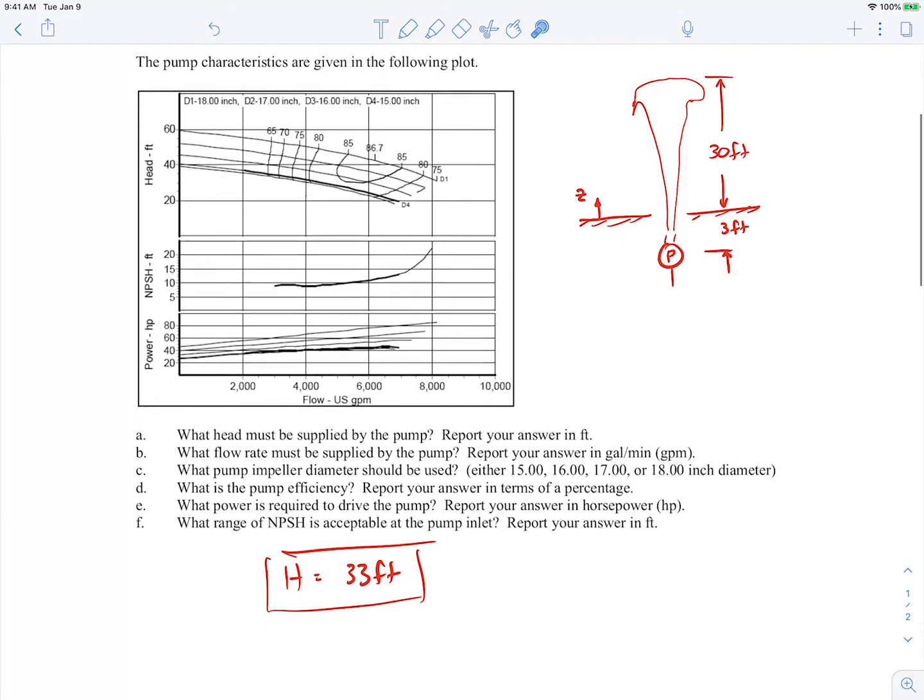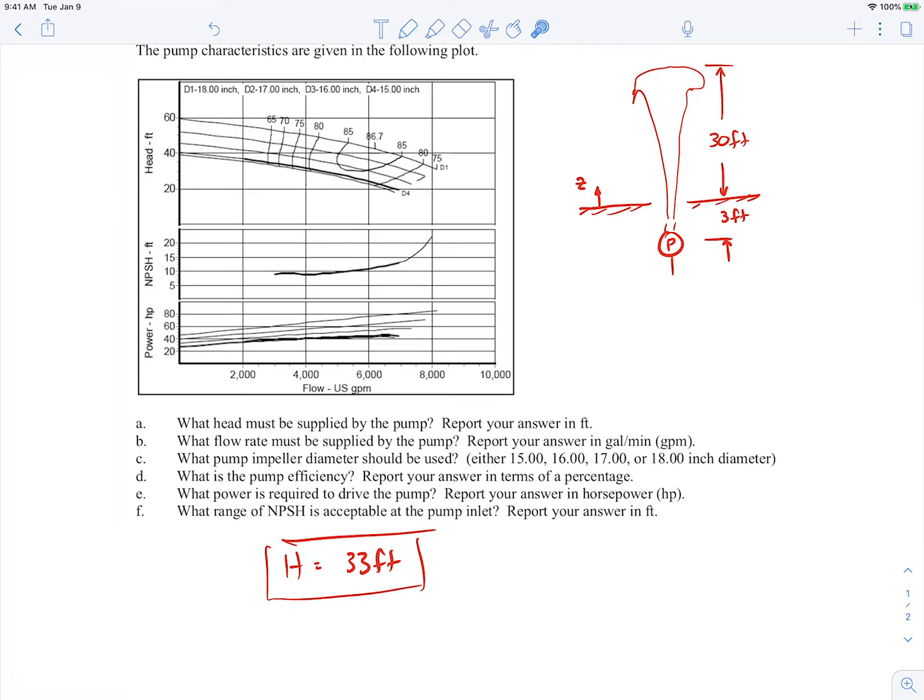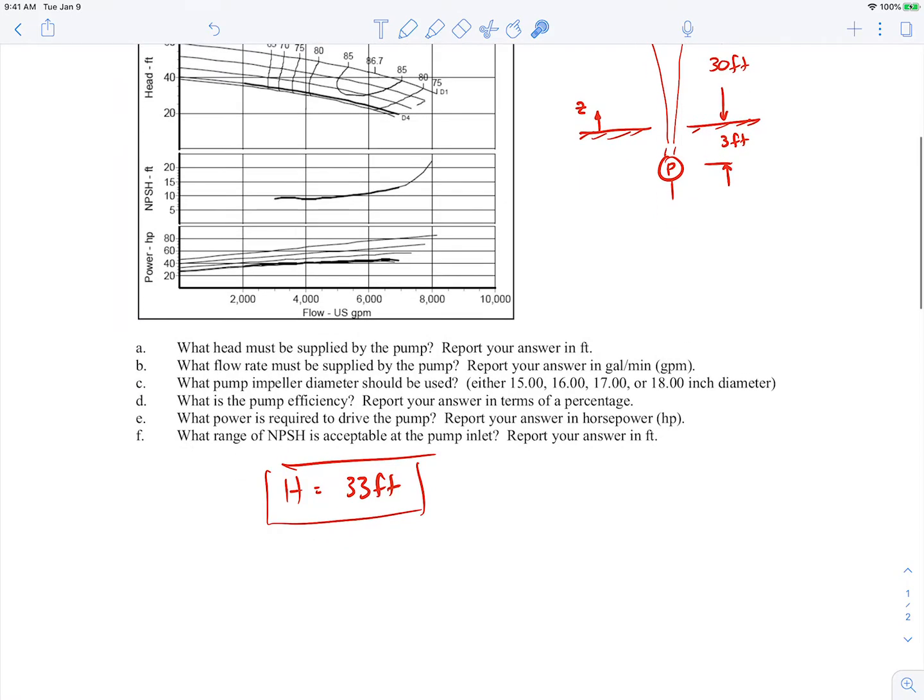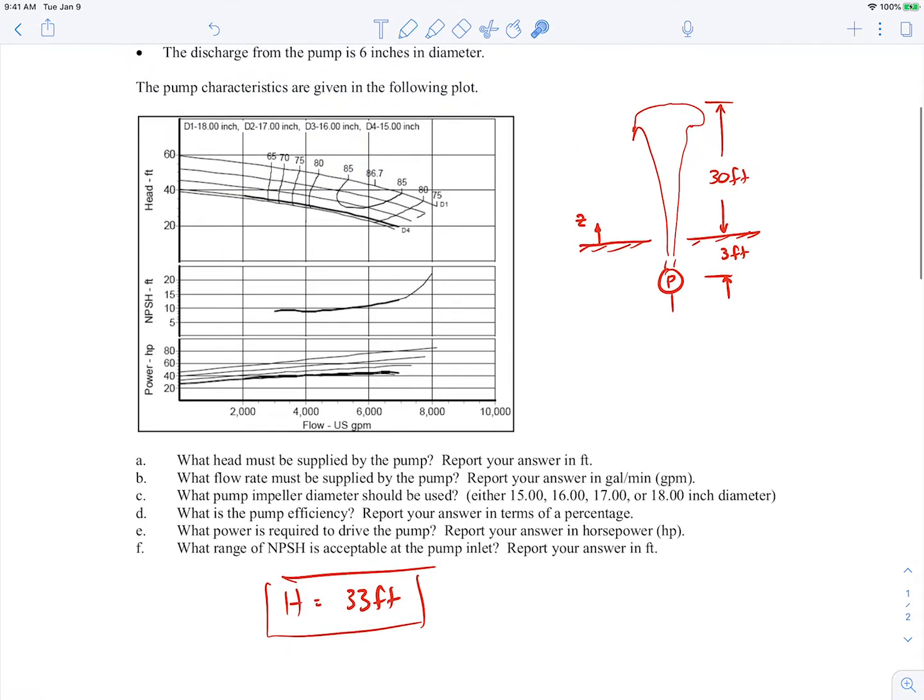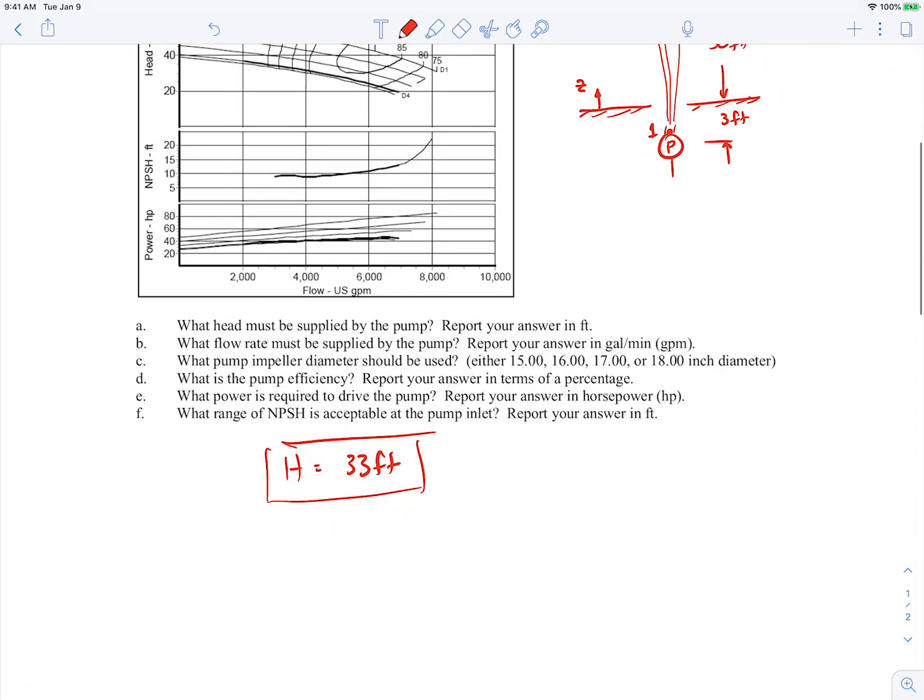Now let's go ahead and figure out what kind of flow rate we need to have. To define the flow rate, we can simply use Bernoulli's equation from the exit of the pump all the way to the top here. So we can call this point 1 down here and point 2 up here, and we'll apply the Bernoulli's equation between those two points.